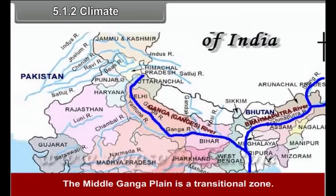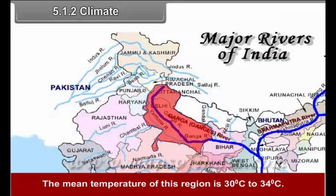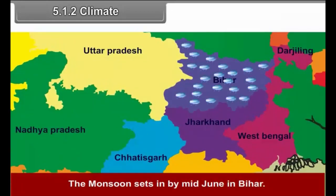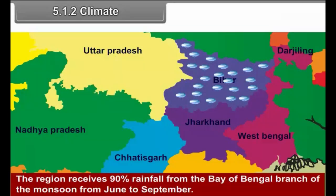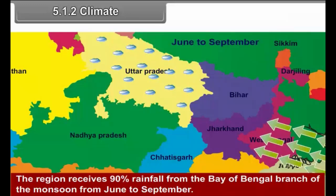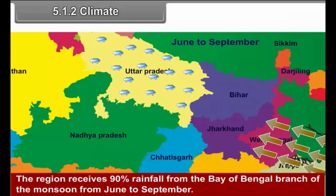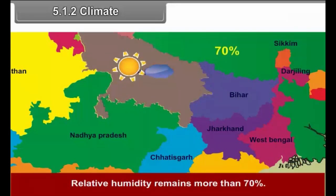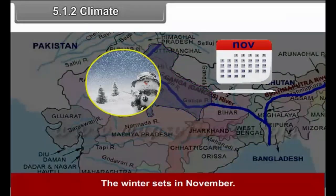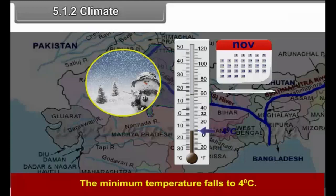The middle Ganga Plain is a transitional zone. The mean temperature of this region is 30 to 34 degrees Celsius. The monsoon sets in by mid-June in Bihar. The region receives 90% of rainfall from the Bay of Bengal branch of the monsoon from June to September. Relative humidity remains more than 70%. Winter sets in November and the minimum temperature falls to 4 degrees Celsius.